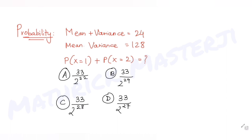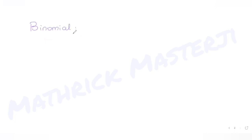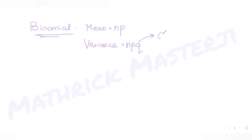Let's solve this. We have a binomial distribution. For a binomial distribution, mean is n·p, where p is the probability of success and n is the number of times the event is done. Variance is given by n·p·q, where q is 1 minus p — the probability of no success. These are the two key formulas for binomial distribution.